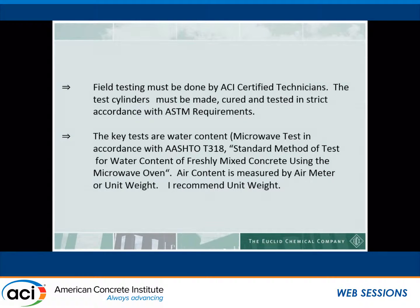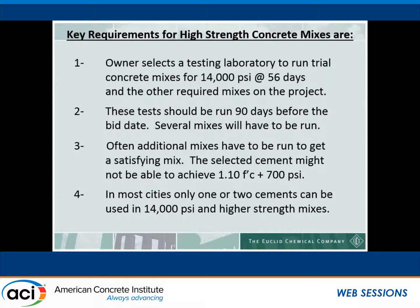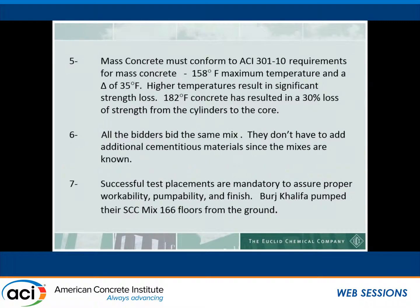Air content is measured by air meter or unit weight. As a key requirement for high-strength concrete, owners should select a testing laboratory to run trial concrete mixes 90 days before bid day, with several mixes to be run and additional mixes as needed. In most cities, only one or two cements can be used to develop that type of strength, and aggregate selection is similarly limited. For mass concrete, the New York Port Authority has tested the ACI 301 requirement of 158°F maximum temperature, which is 70°C, with a delta of 35°F. High temperatures result in significant strength loss.